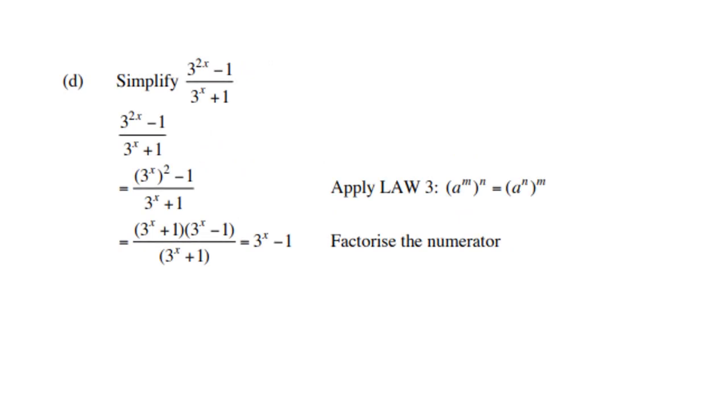The next example: simplify 3 to the power 2x minus 1 over 3 to the power x plus 1. What you can do is 3 to the power 2x can be changed into 3 to the power x to the power 2. That is the third law we are applying. The 2 terms on top represent a difference, so we can factorize the difference: 3 to the power x plus 1, 3 to the power x minus 1. Then the 3 to the power x plus 1 brackets will cancel, and we're left with 3 to the power x minus 1.